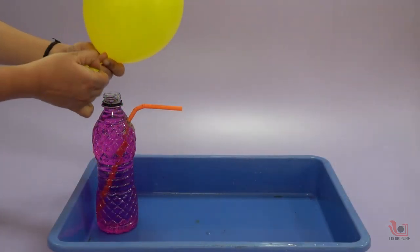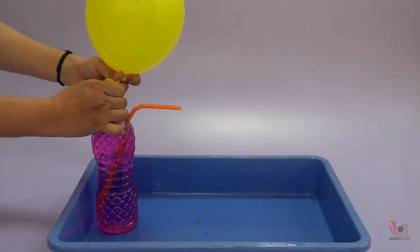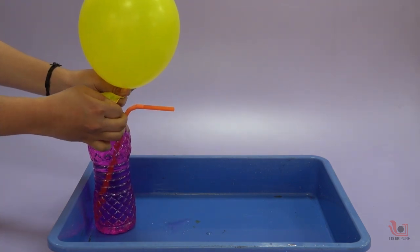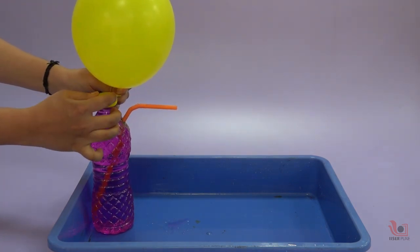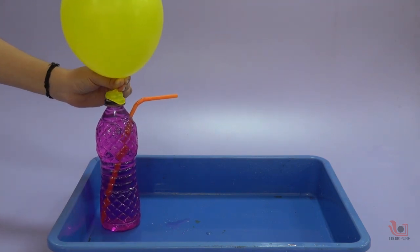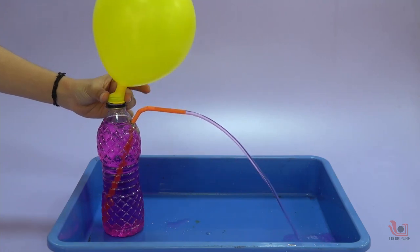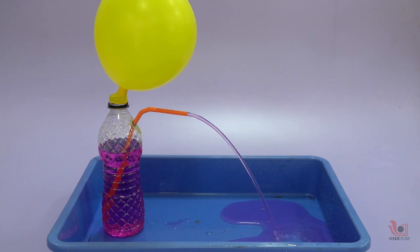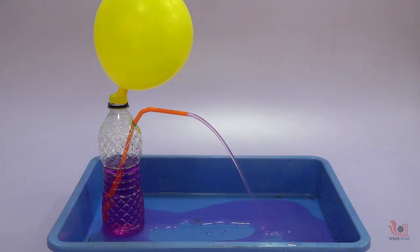Now, inflate the balloon to its medium size, hold the neck of the balloon and fix it to the mouth of the bottle. Make sure that there is no air leakage from the balloon. When you remove the hand from the balloon's mouth, you will see the beautiful fountain start from the bent straw.